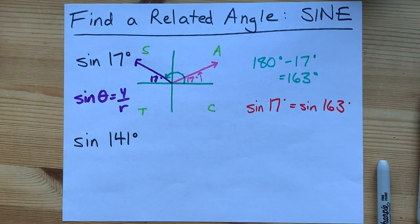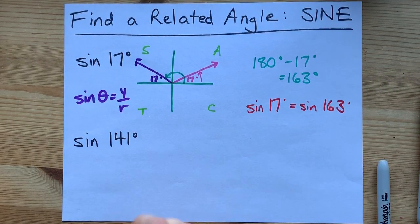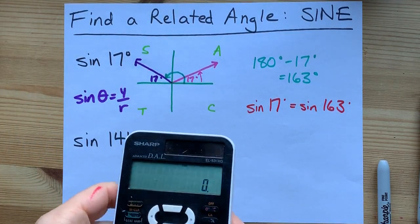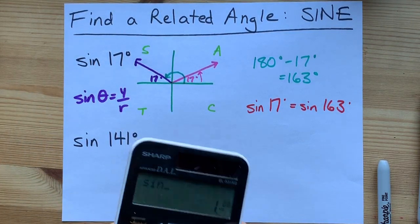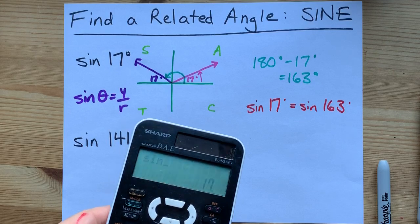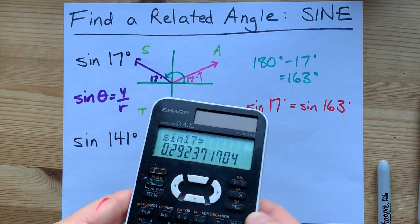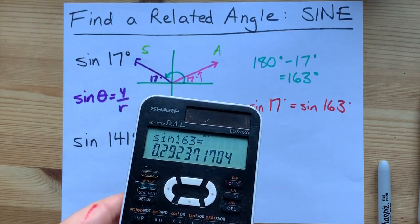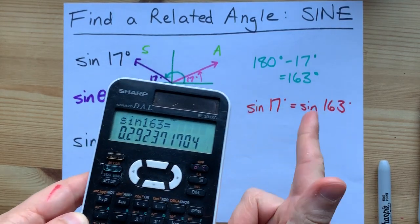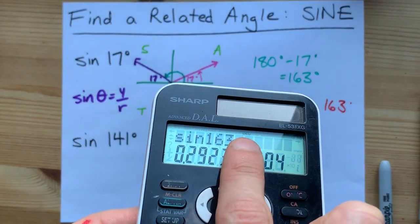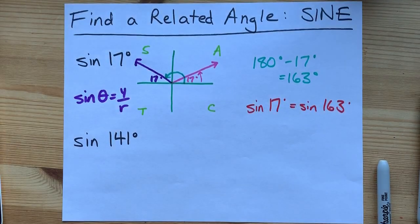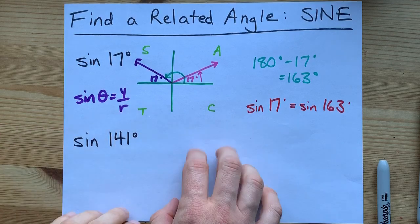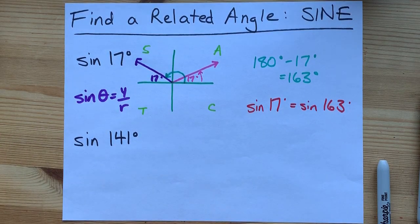That's what it means to get a related angle. And just to prove to you that that is true, the sine of 17 is 0.2923. The sine of 163 is 0.2923. Please make sure you're in degree mode if you're using your calculator for this. Shall we do it three more times for you? Yes, we shall.